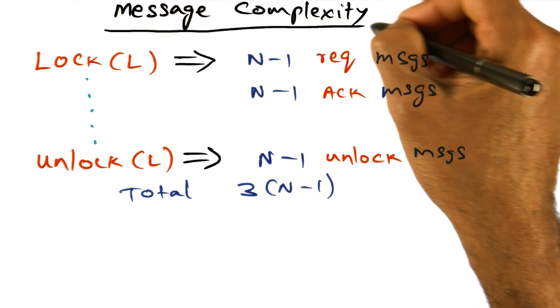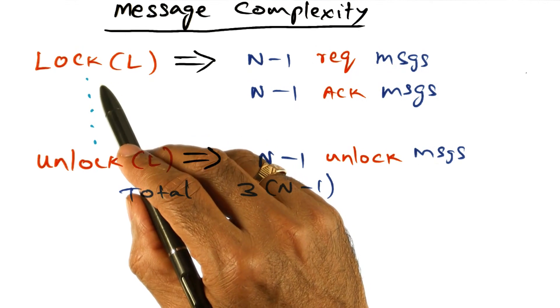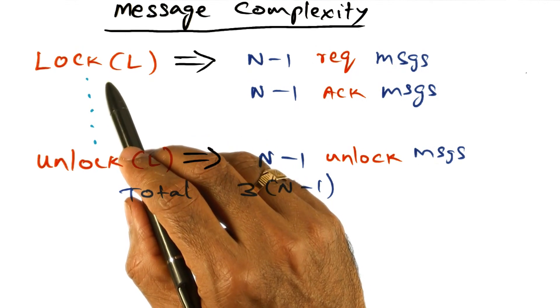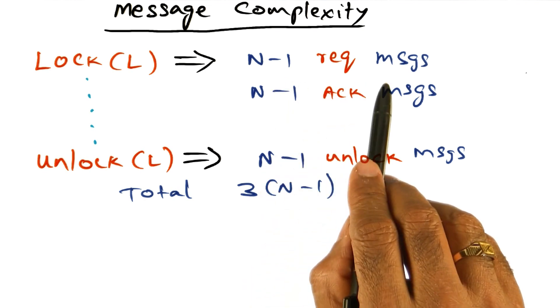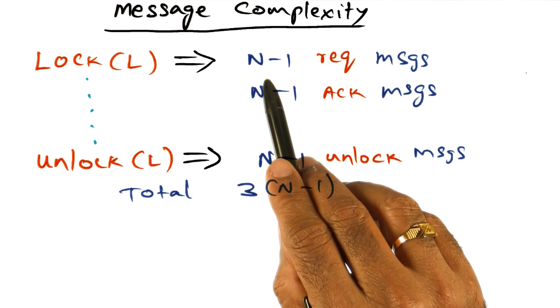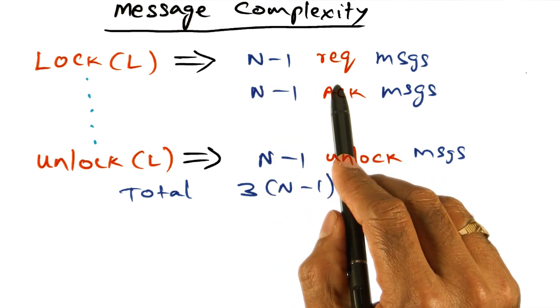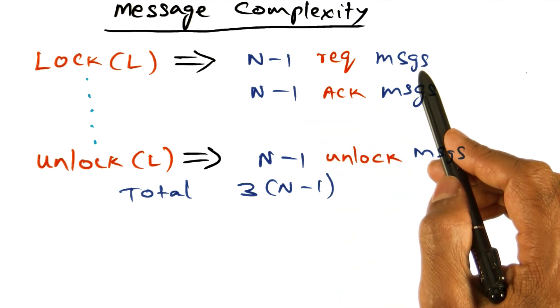Let's look at the messaging complexity of the mutual exclusion lock algorithm. The lock primitive: when a process makes a lock request, it sends n minus 1 request messages. Because there are n nodes in the distributed system, there are n minus 1 peers, and so every node has to send a request message to all its peers. So n minus 1 messages are the request messages sent out.